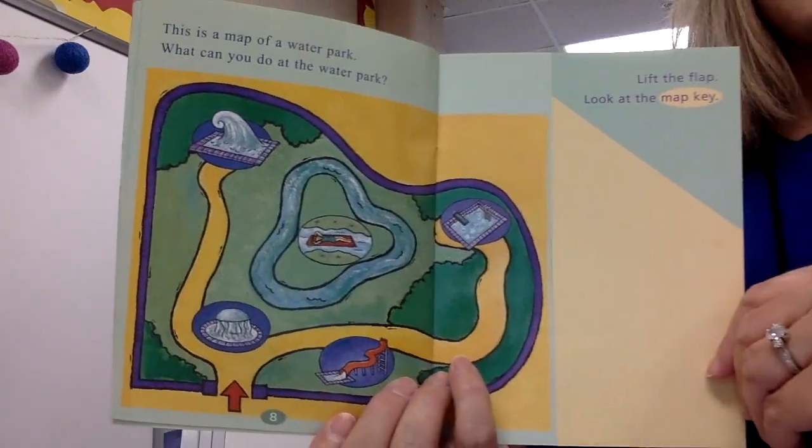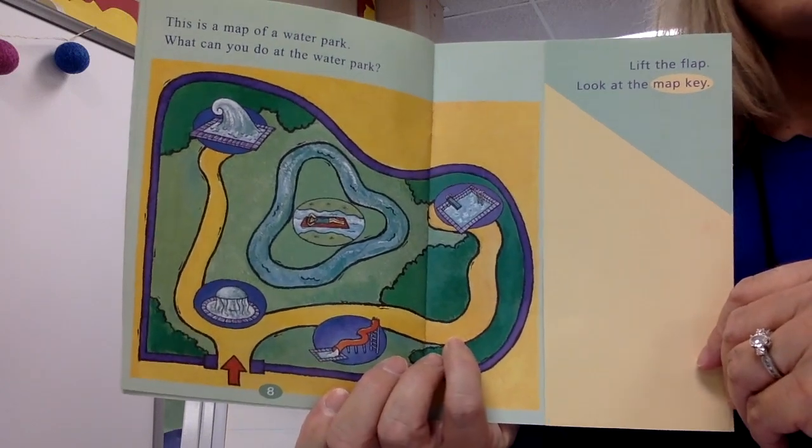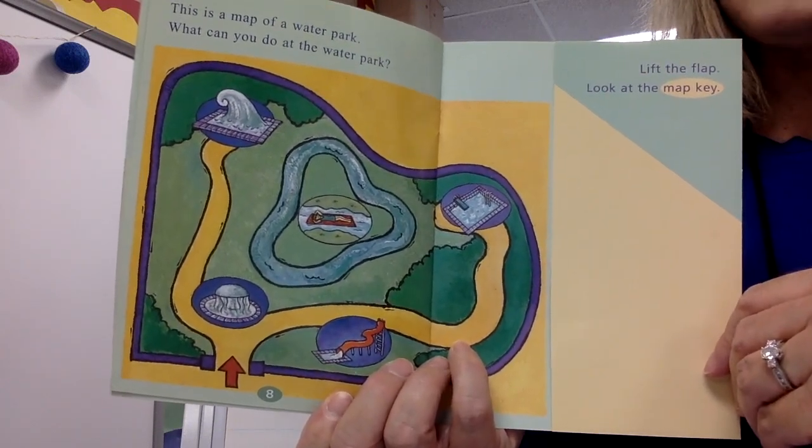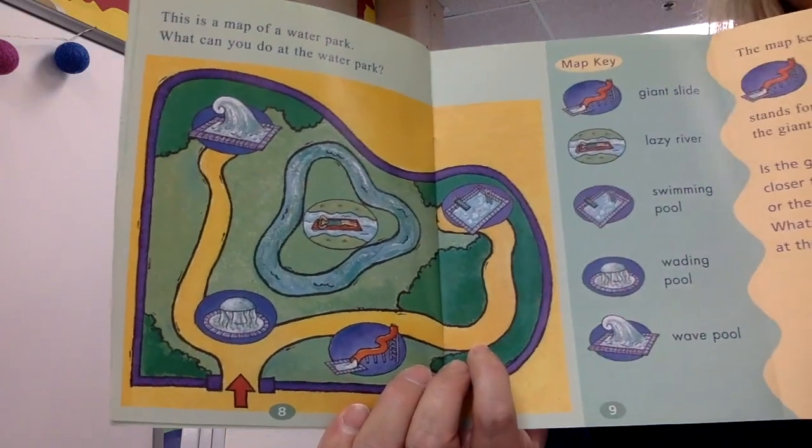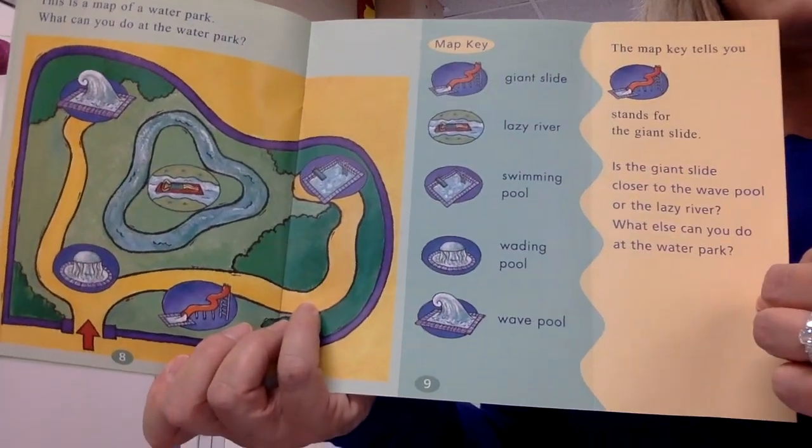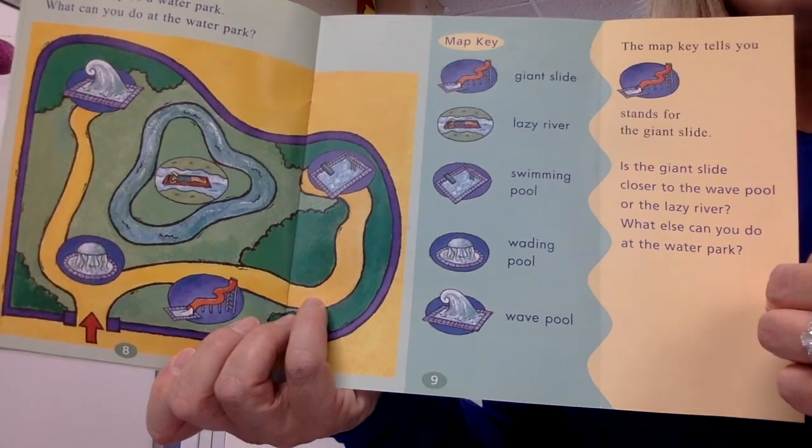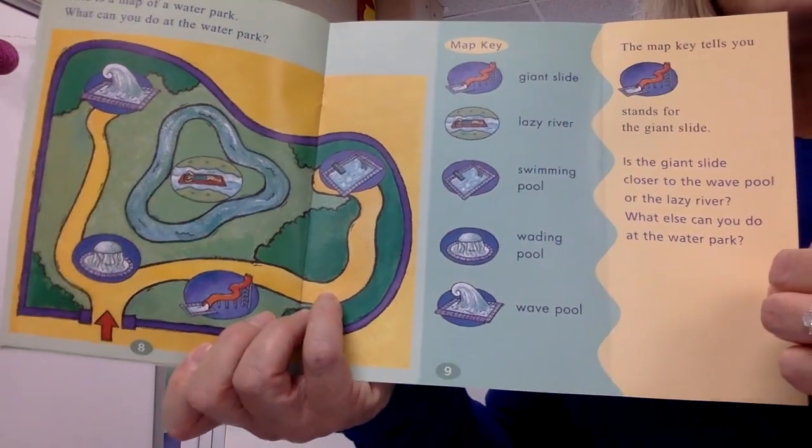This is a map of a water park. What can you do at the water park? Lift the flap and look at the map key. Oh, this reminds me of Cascade Bay. Giant slide, lazy river, swimming pool, wading pool, wave pool.